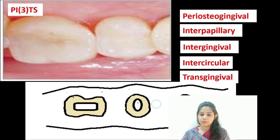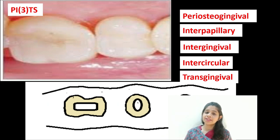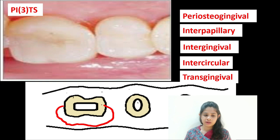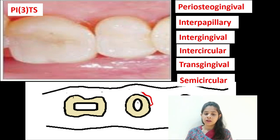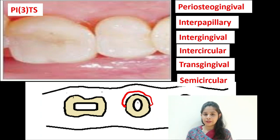The transgingival fibers are seen in and around the teeth and are present in the attached gingiva, basically surrounding the teeth. The last subgroup of the minor fiber group is the semicircular fiber — as the name suggests it forms a half circle, arising from the mesial aspect and going towards the distal aspect, getting inserted into the cementum on the distal aspect of the same tooth. So the mnemonic PITS stands for: Periosteogingival, Interpapillary, Intergingival, Intercircular, Transgingival, and Semicircular.